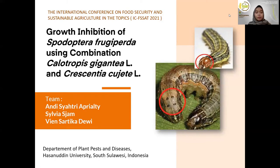Assalamu'alaikum warahmatullahi wabarakatuh. Let me introduce myself. My name is Anisha Triapralti. My team is Sylvia Sham and Finn Kartika Dewi. The title of our journal is 'Growth Inhibition of Spodoptera frugiperda Using a Combination of Calotropis gigantea and Tagetes dujete.'